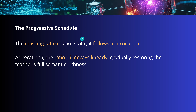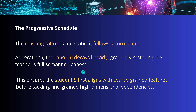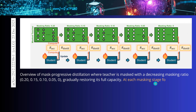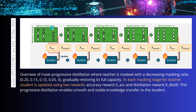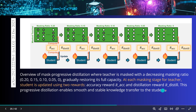The masking ratio is not static — it follows a curriculum. At iteration I, the ratio R decays linearly, gradually restoring the full teacher capacity, the full semantic richness and causal reasoning. This ensures the student first aligns with coarse-grained features before tackling fine-grained high-dimensional dependencies. You start with a masking ratio of 20%, then 15%, 10%, 5%, and then zero. At each masking stage, the student AI is updated using two reward functions: an accuracy reward and a distillation reward. This progressive distillation enables smooth and stable knowledge transfer, and combining them can jump another 10 percentage points in performance.